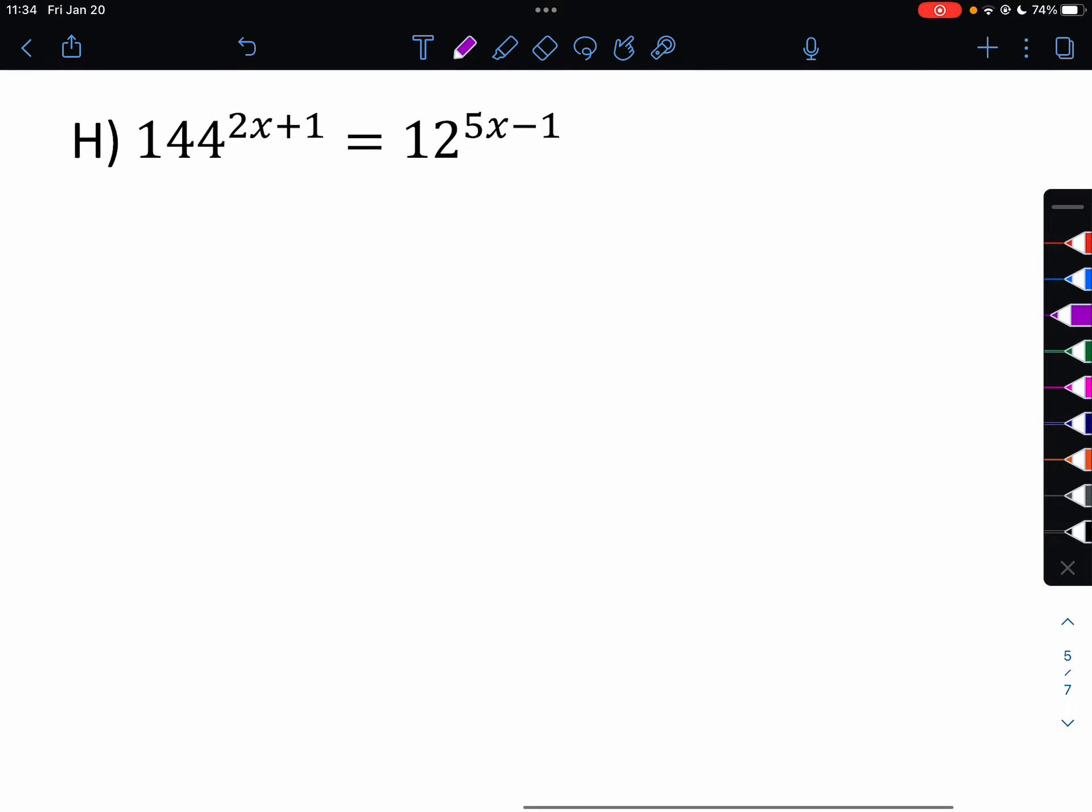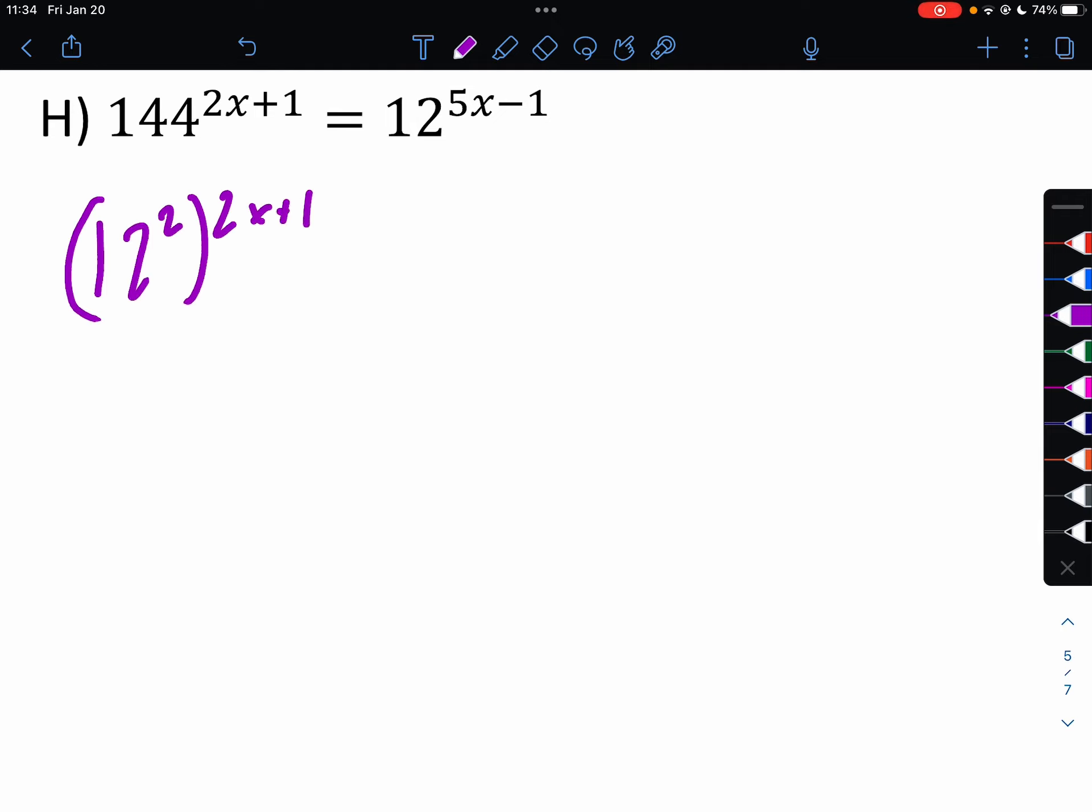Letter h. So this would be 12 squared to the 2x plus 1 equals 12 to the 5x minus 1. So it would be 4x plus 2 equals 5x minus 1. And then x would be 3.